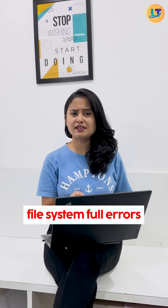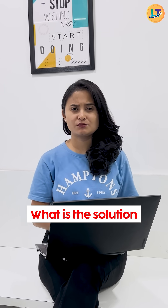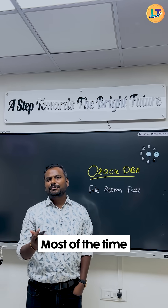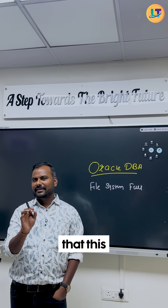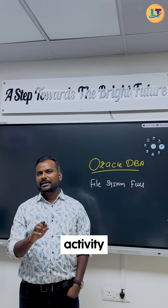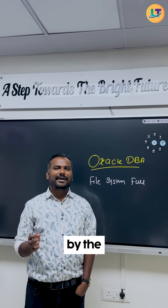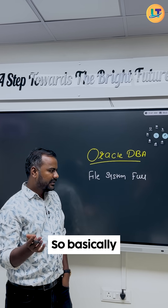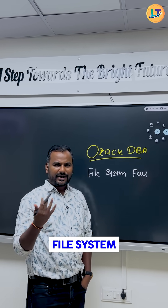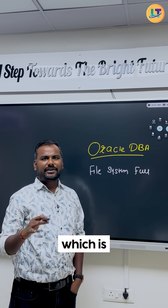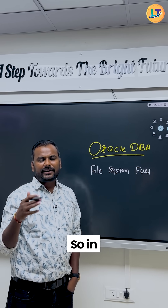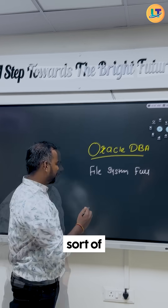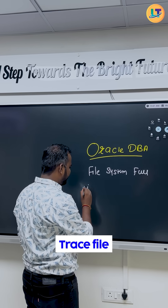Ankur sir, I am facing this file system full error. What is the solution for that? Devanshi, most of the time I have seen that this kind of activity is done by the junior DBA. So basically when you have a file system which is getting full, in that time we try to delete some sort of trace file.